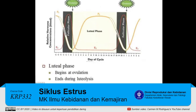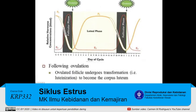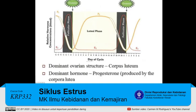The luteal phase begins at ovulation and ends during luteolysis. Following ovulation, the ovulated follicle undergoes a transformation and becomes the corpus luteum. This process is known as luteinization. During the luteal phase, the dominant ovarian structure that is present is the corpus luteum. The corpus luteum is the structure that is secreting progesterone.